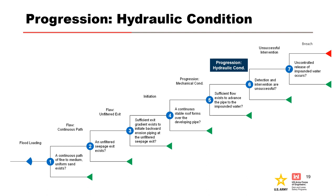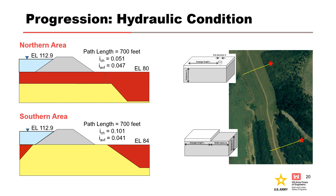The other node in the backward erosion piping event tree affected by the flood-fighting efforts is the hydraulic condition for progression. The northern and southern areas contain differing seepage exit conditions: the northern area exhibits a hull-type exit through defects in the confining layer, while the southern area contains an area-type exit. The hull-type exit in the northern area results in a focus of under-seepage and a reduction in the critical gradient for progression of backward erosion piping by a factor of approximately 2. Absent any flood-fighting efforts, the average foundation gradient in the northern area is 0.047, approaching the critical gradient of 0.051 based on the adjusted Schmertmann method. In the southern area, the average foundation gradient of 0.041 is well below the critical gradient of 0.101, again based on the adjusted Schmertmann method.